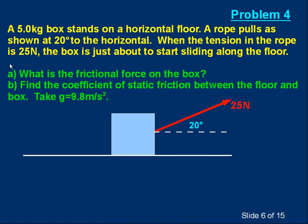Problem four: a five-kilogram box is on a horizontal floor. A rope pulls at 20 degrees to the horizontal. When the tension in the rope is 25 newtons, the box is just about to start sliding along the floor — so we're in a condition of limiting friction. The questions are: what is the frictional force on the box, and find the coefficient of static friction between the floor and the box? Value for g is 9.8 metres per second squared. Pause the video, draw a free body diagram showing all forces, and see if you can answer the questions.